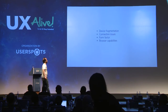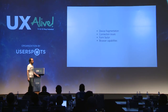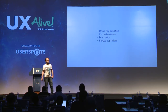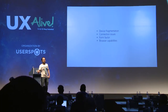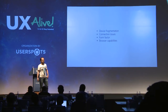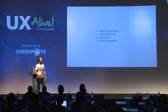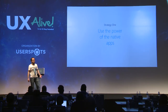There are several issues. Device fragmentation is one. Connection issues, form factor, and browser capabilities are some of the reasons for that. And if we want to provide a better experience on mobile, then we should use more powerful platforms like native apps. Native apps can help us get rid of some of the problems we face on mobile. So the first strategy is: use the power of native apps more.